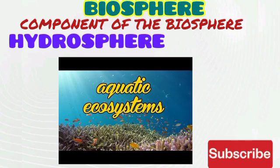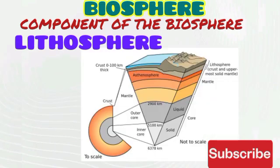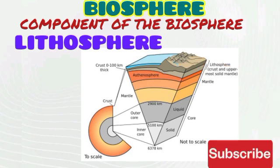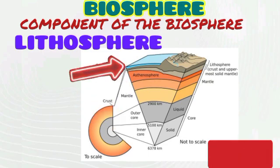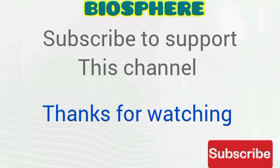Various aquatic ecosystems will be discussed in our subsequent video. The last component of the biosphere is the lithosphere. The lithosphere is the solid outer part of the earth. It comprises the earth's crust and the upper region of the mantle. The structure of the earth includes the inner core, the outer core, the mantle, as well as the earth crust. Only the earth crust and the upper region of the mantle make up the lithosphere. Please subscribe to support this channel.